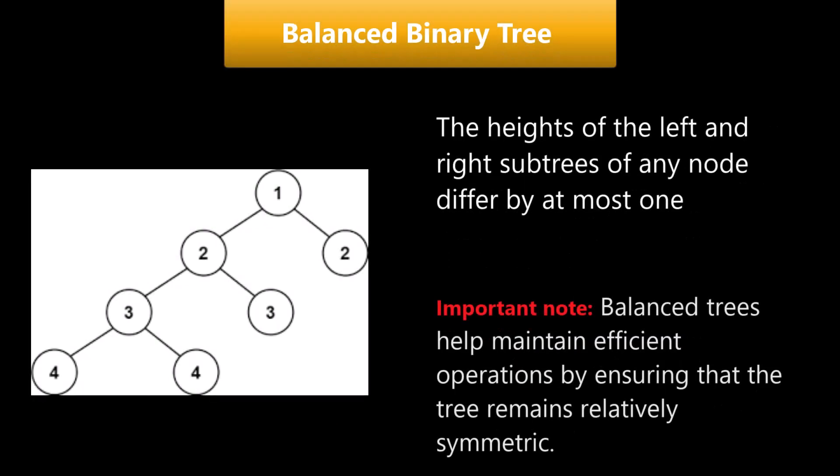Next is balanced binary tree, which is a binary tree in which the heights of the left and right subtrees of any node differ by at most one. Examples include AVL trees, red-black trees, and B-trees. Balanced trees help maintain efficient operations by ensuring that the tree remains relatively symmetric.